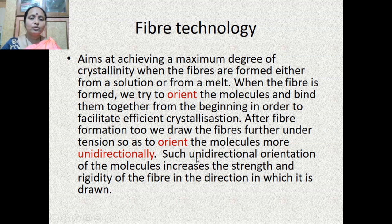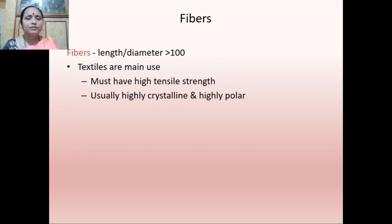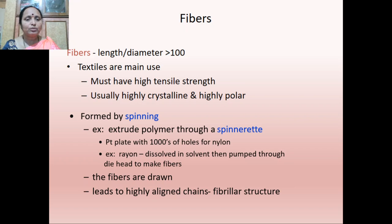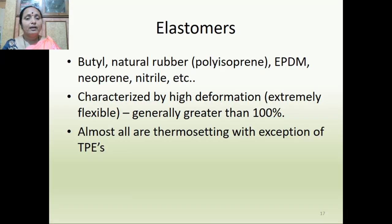Such unidirectional orientation of molecules increases the strength and rigidity of the fiber in the direction in which it is drawn. Fiber length is usually above 100 units; fibers must have high tensile strength, are usually highly crystalline and highly polar. They are typically formed by spinning — extruding polymer through a spinneret (a platinum plate with thousands of holes). For example, nylon, rayon — dissolving in solvent then pumping through a die head. The fibers are drawn, leading to a highly aligned chain fibrillar structure.